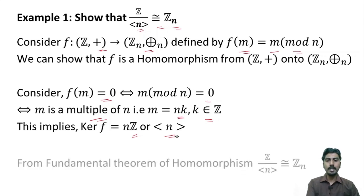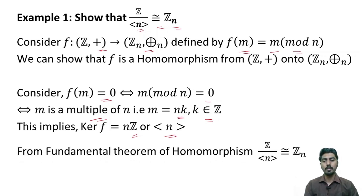Hence, by the fundamental theorem of homomorphism, Z by the subgroup generated by n is isomorphic to Zn.